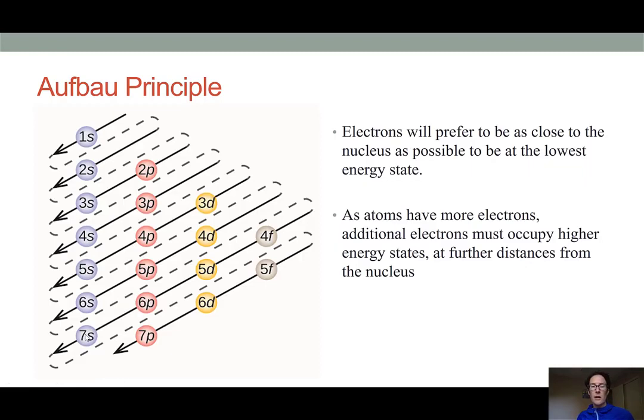So as we get down the periodic table, we know that each element has one more proton than its neighbor, and with one more proton comes one more electron. So when we get to the larger types of elements, we'll see that their atoms have electrons occupying these higher energy orbitals.